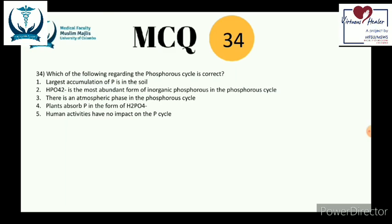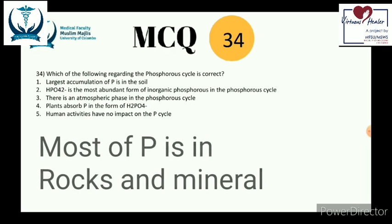Question 34: which statement regarding the phosphorus cycle is correct? The phosphorus cycle is a biogeochemical process moving phosphorus across the lithosphere, biosphere, and hydrosphere. Importantly, the atmosphere does not play a role in phosphorus movement — a key differentiating factor from the nitrogen and oxygen cycles. Answer 1 states the largest accumulation of phosphorus is in the soil — this is false; most phosphorus is stored in rocks and minerals.